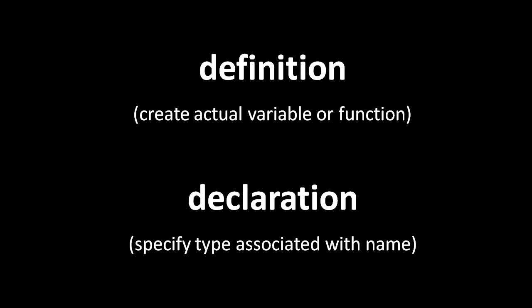For example, a function definition specifies a function's name, parameter names and types, the return type, and provides a body in curly braces because the definition actually creates a function. A function declaration, on the other hand, specifies the name, the parameter types, and the return type, but not the parameter names or a body. You actually can specify parameter names in a function declaration, but they are ignored by the compiler.